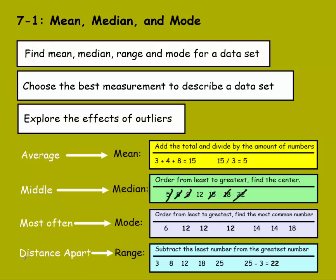The range means the distance apart between the lowest and the highest number of a data set. For example, we have this data set of 3, 8, 12, 18, 25. 3 is the lowest number, 25 is the highest number. So what is the distance between them? We know to solve that, we have to subtract the least number from the greatest. So we do 25 minus 3. The distance between 25 and 3 is 22, which is our range.